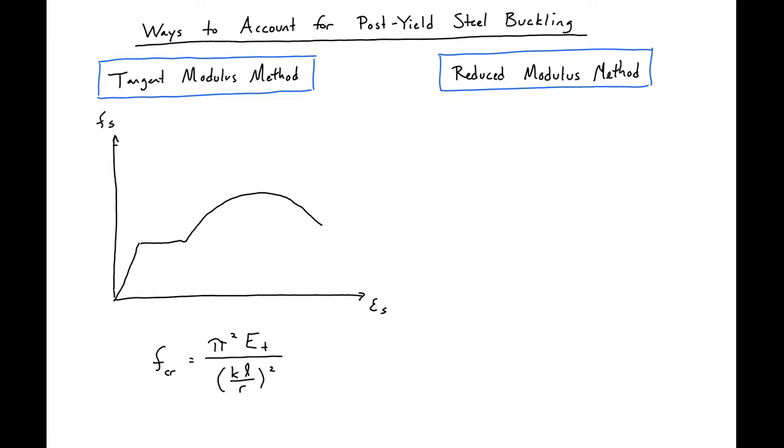There are two main ways that we can account for steel buckling after yielding. So you can see we have our buckling stress expression that we had from before. This is just an Euler buckling stress expression.